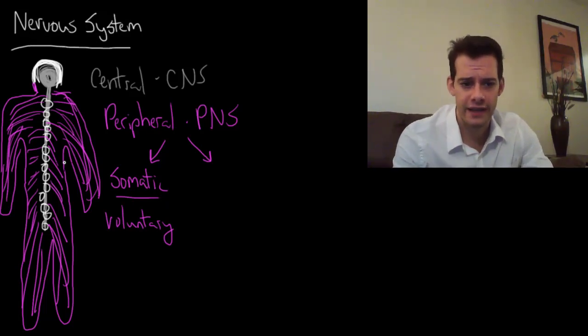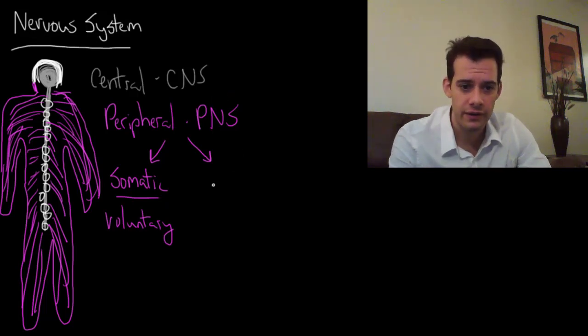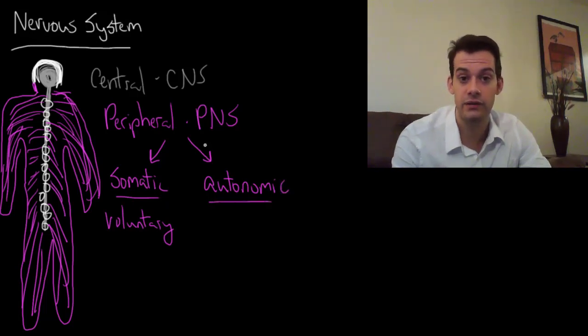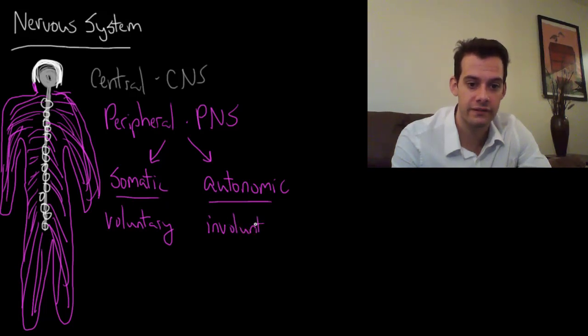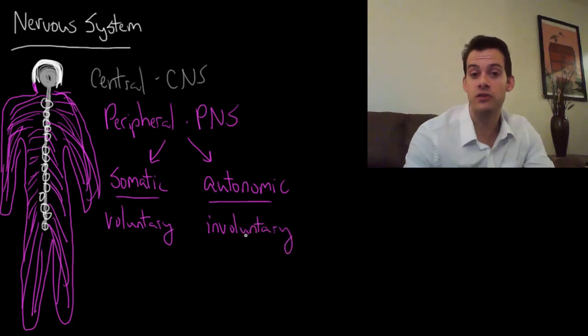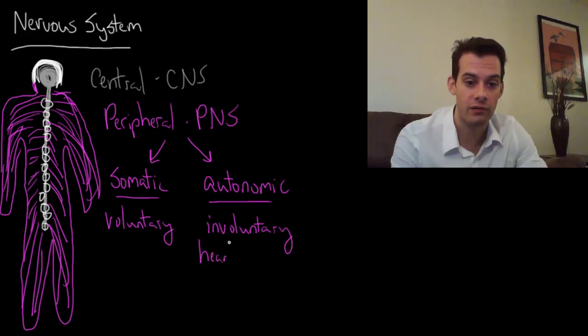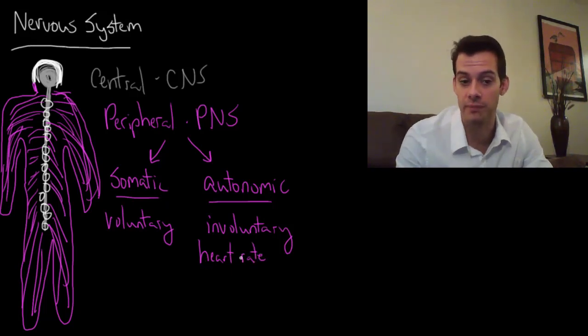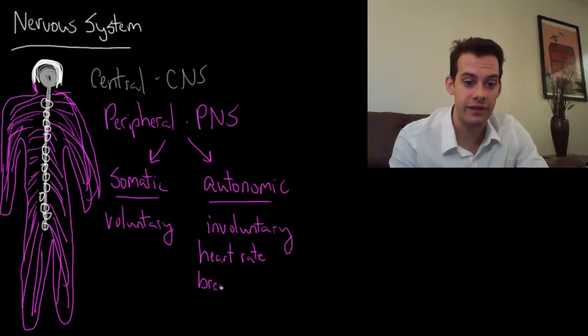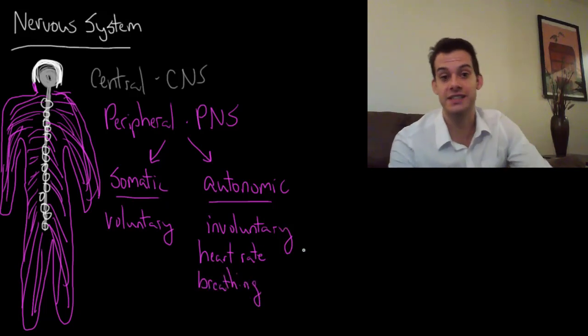But there's also stuff in the peripheral nervous system that you don't have control over, and this falls under the autonomic division of the peripheral nervous system. The autonomic is all this involuntary stuff. You can think of any processes in your body that you don't have control over. That would be things like your heart rate—you don't have to consciously think about contracting muscles to make your heart beat. You don't have to think about breathing; it just happens on its own.